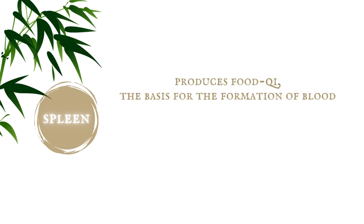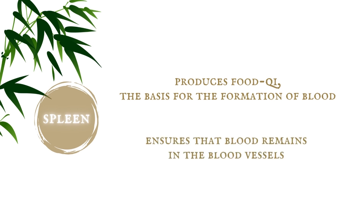Second, the spleen. The spleen is related to blood in two ways. First of all, it is the origin of blood as it produces food qi, which is the basis for the formation of blood. Secondly, spleen qi ensures that the blood remains in the blood vessels and does not extravasate.